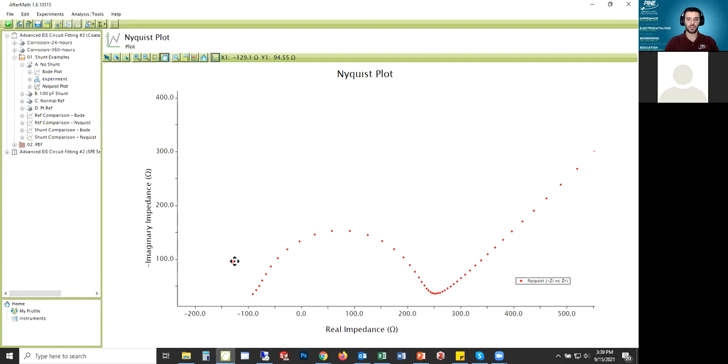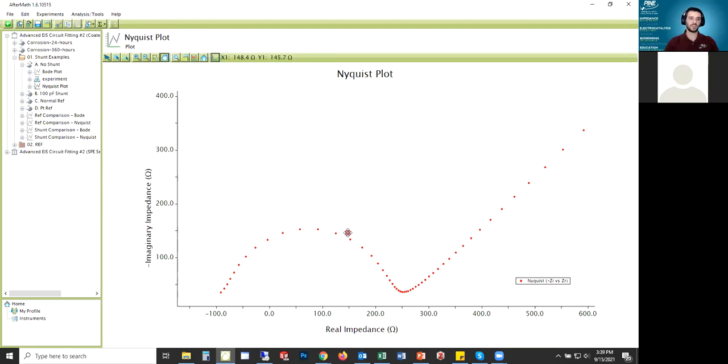If you're familiar with impedance at all, you know that this doesn't really make any sense. There's really no such thing as negative 100 ohms. That's like creating energy from nothing. This is where this artifact comes into play. It's this negative semicircle.